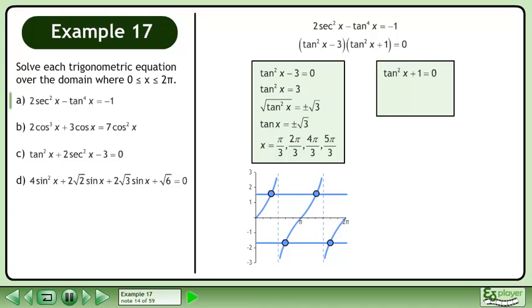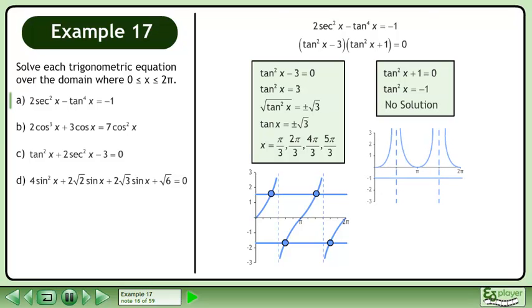Now solve tan²x plus 1 equals 0. Isolate tan²x. There is no solution.